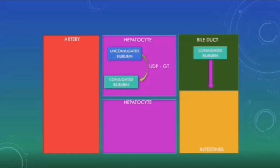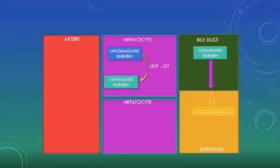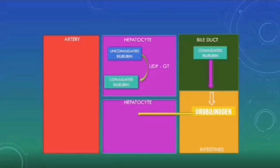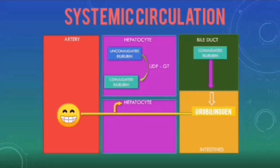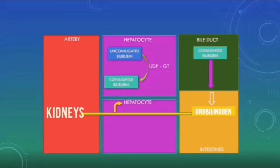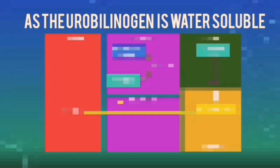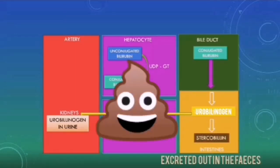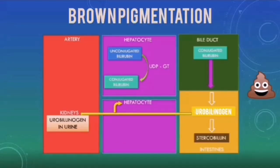Bacteria will act on the conjugated bilirubin in the intestines and form urobilinogen. A small proportion of the urobilinogen will be taken back up to the liver through the portal system, and an even smaller proportion will reach the systemic circulation and eventually reach the kidneys. In the kidneys, as the urobilinogen is water-soluble, it can be excreted out in the urine. The remaining urobilinogen in the intestines will be further metabolized into stercobilin, which is excreted in the feces and gives feces their characteristic brown pigmentation.